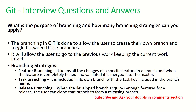What is the purpose of branching, and how many branching strategies can you apply? Branching in Git allows the user to create their own branch, toggle between branches — often called feature branches — and also go back to previous work while keeping current work intact. Some branching strategies include: feature branching, where you create one feature branch per user story; task-based branching; and release branching — where when you have enough features ready to release, you create a new release branch for that code to be pushed.